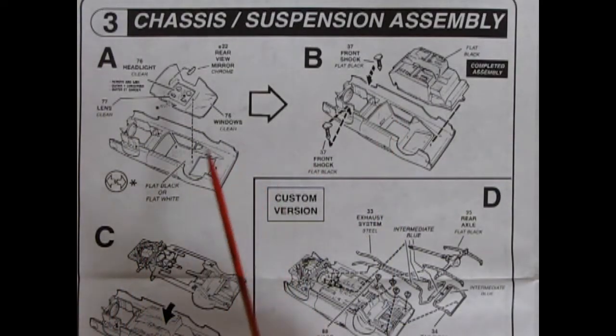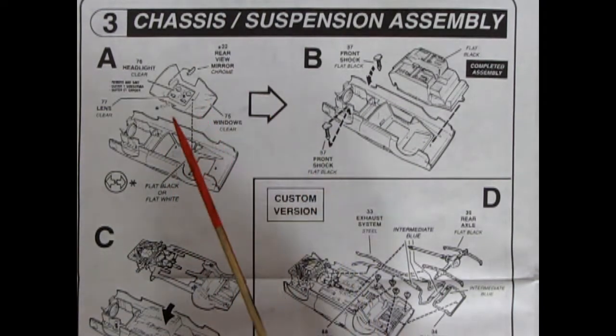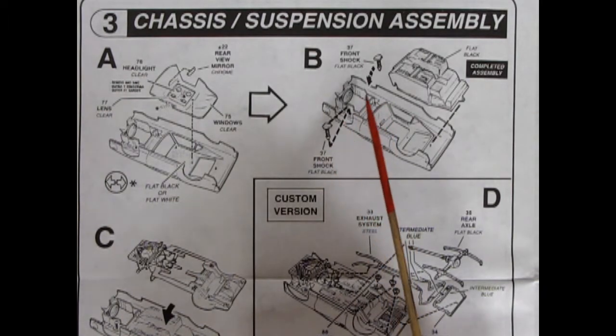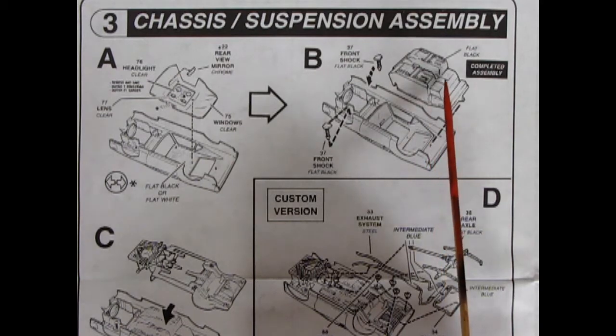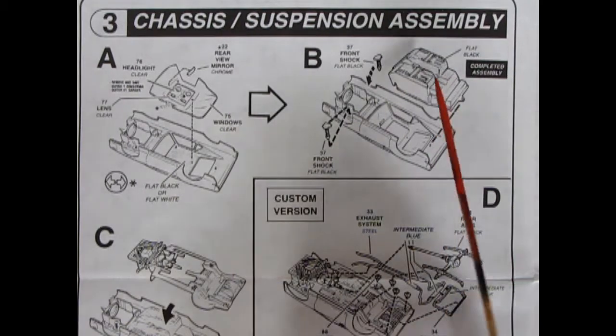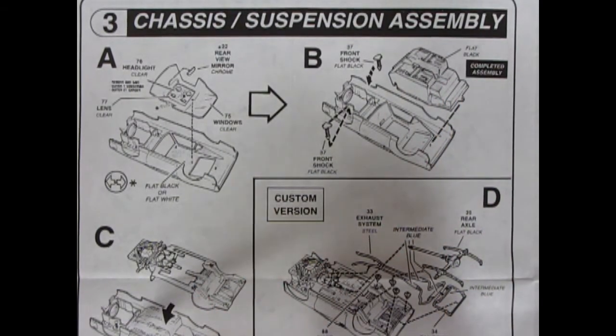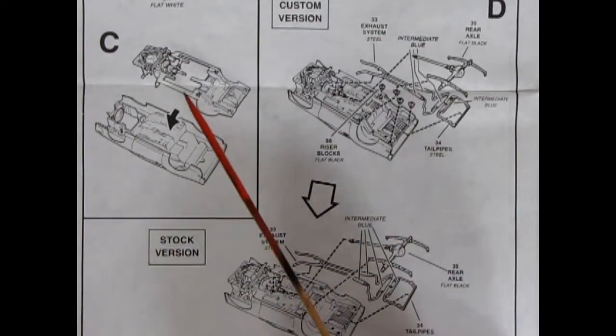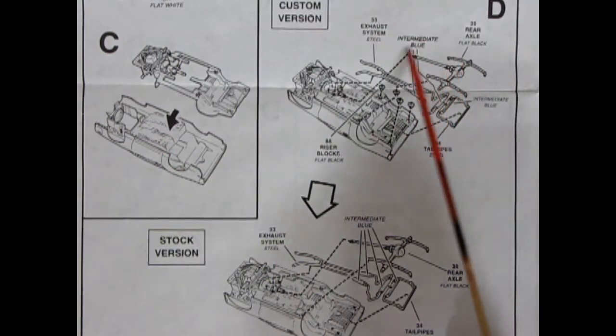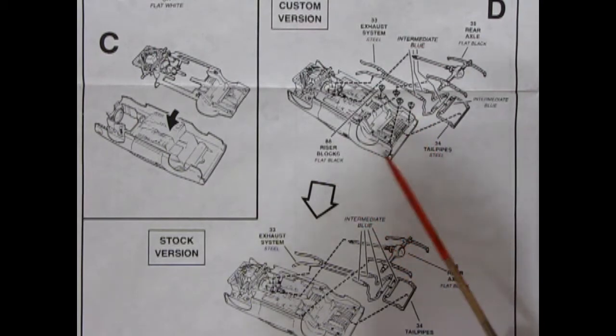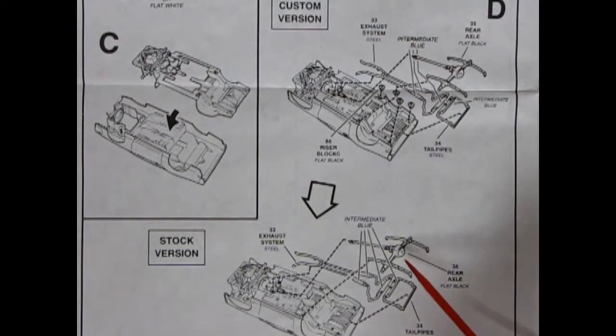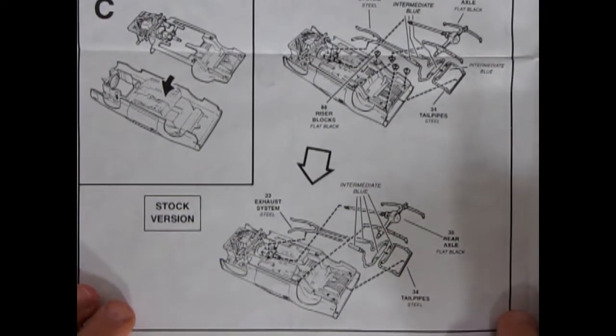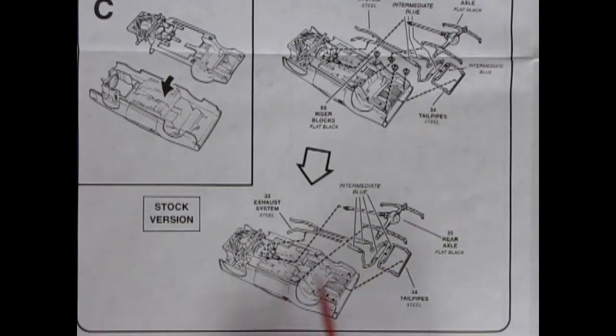Step three is our chassis and suspension assembly. So that basically is our body with the glass popping in. It's reminding you to remove all the little taillights and turn signal lights out of the center of the glass. Then we move over to step B. There's some front shocks that will glue inside your wheel wells. Then the interior pops in here. And you paint the bottom of the interior flat black. Because all that is molded in. And then our chassis over here. Our chassis will pop into the completed body here. And then all our rear suspension components will pop in there. And you have a choice of putting in riser blocks as well underneath. Then our stock version down here. It's showing just the rear axle going in without the risers. All popping into our rear end assembly.